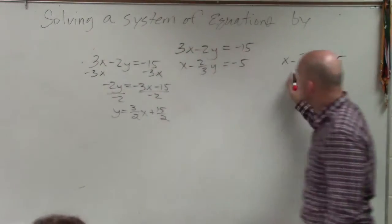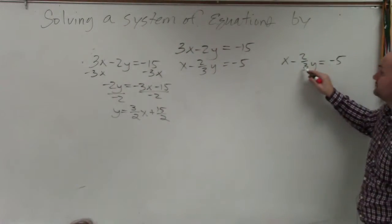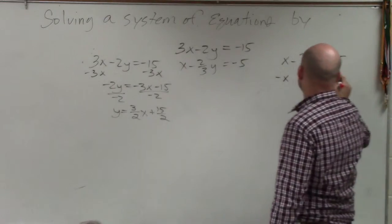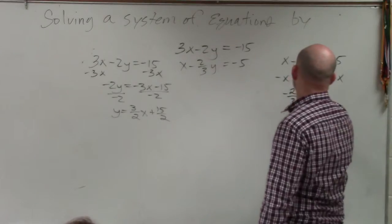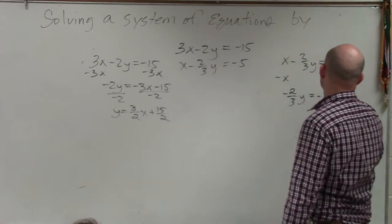Over here, I can see I am multiplying by negative 2 thirds and adding an x. So I subtract an x. So therefore, I have negative 2 thirds y equals negative x minus 5.